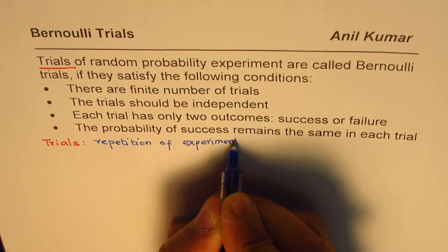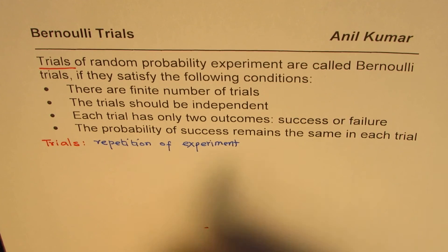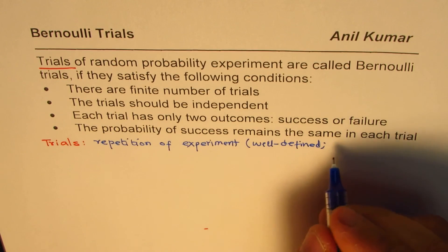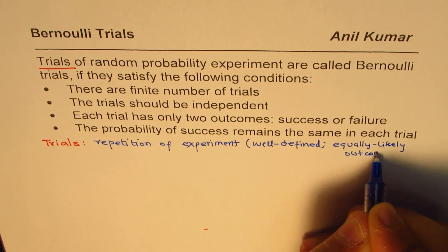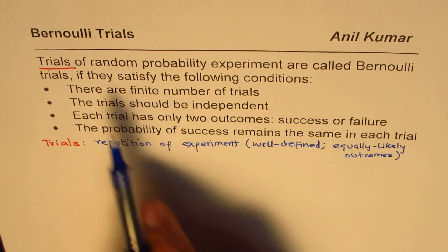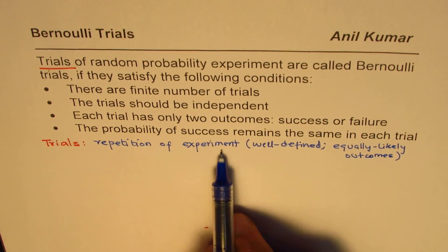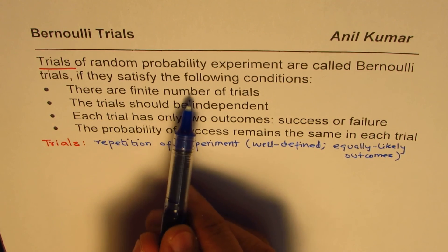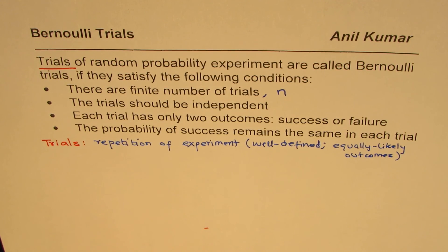In our case, we're talking about a probability experiment. You can also watch my video on probability experiment where we discuss what is a random probability experiment. Basically, repetition of an experiment which is well-defined and has equally likely outcomes. So trials is repetition of an experiment. Since the experiment is well-defined, you can do it over and over again. The first point is there are a finite number of trials — let's say the number is N. So N times we are doing an experiment.